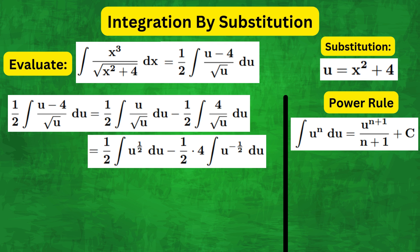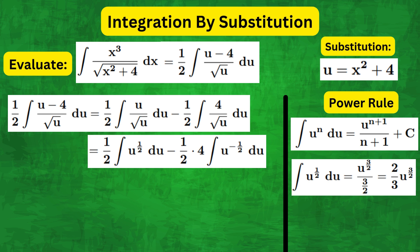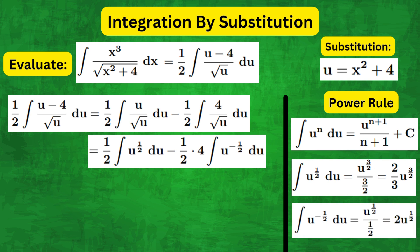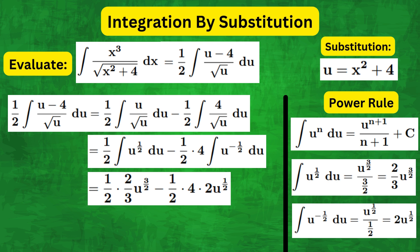Using this rule, the integral of u to the half becomes 2 over 3 u to the 3 over 2, and for u to the minus a half we get 2 u to the power of a half. Combining the results, we get a half times 2 thirds u to the 3 over 2 minus a half times 4 times 2 u to the power of a half. Simplifying, we get a third u to the 3 over 2 minus 4 u to the power of a half.